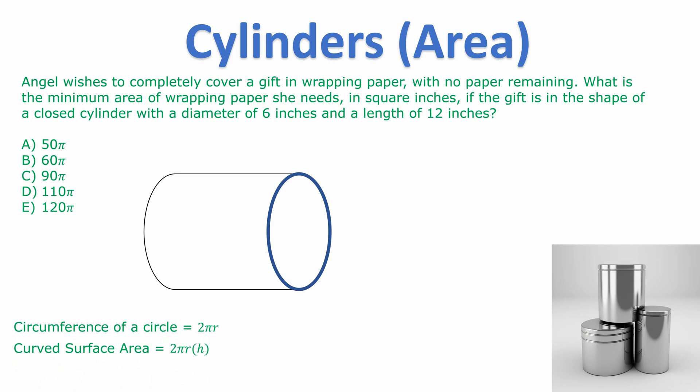The reason the book often adds plus 2πr² is that usually the question is covering a closed cylinder with a circle at the top and a circle at the bottom. Or in this case a circle on the left and the right. But in some circumstances it might be a hollow tube where there aren't any circles on the top or the bottom.